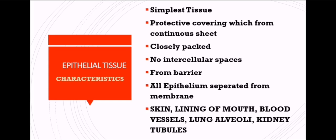Epithelial tissue forms a continuous sheet acting as a protective covering across the entire layer of your skin. It is closely packed, meaning there are no intercellular spaces between two cells, and it forms a barrier. All epithelium are separated by a membrane. It is present in skin, the thin lining of the mouth, blood vessels — veins and arteries — lung alveoli, and kidney tubules including the proximal convoluted tubule (PCT) and distal convoluted tubule (DCT).